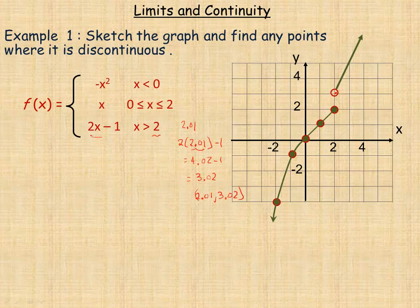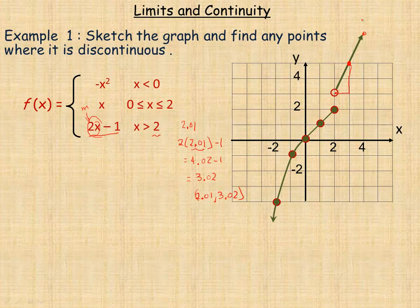Otherwise, this is a line with a slope of two. Remember y equals mx plus b — the two is the slope. So starting from the open circle at (2, 3) and going over one, we go up two to get another point. Over one and up two gives another point, and that's why the line goes to the right and upward like that.